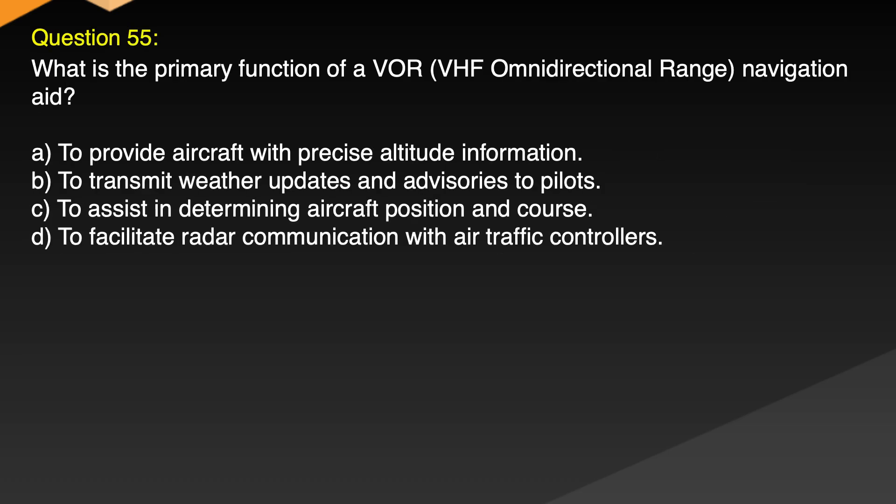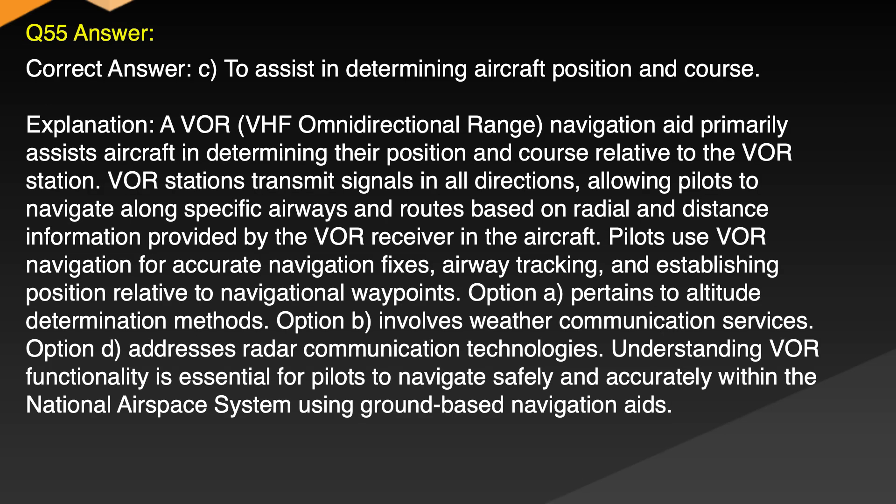Question 55. What is the primary function of a VOR, VHF Omnidirectional Range, navigation aid? A. To provide aircraft with precise altitude information. B. To transmit weather updates and advisories to pilots. C. To assist in determining aircraft position and course. D. To facilitate radar communication with air traffic controllers. Correct answer: C. To assist in determining aircraft position and course.